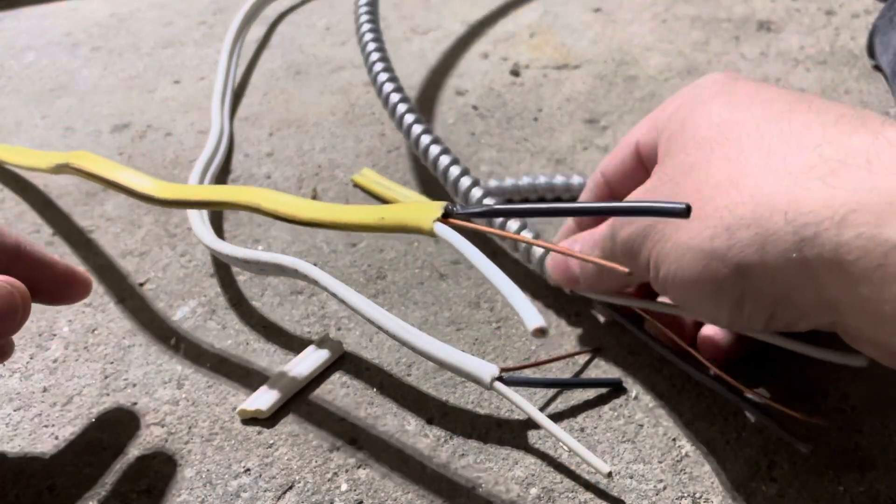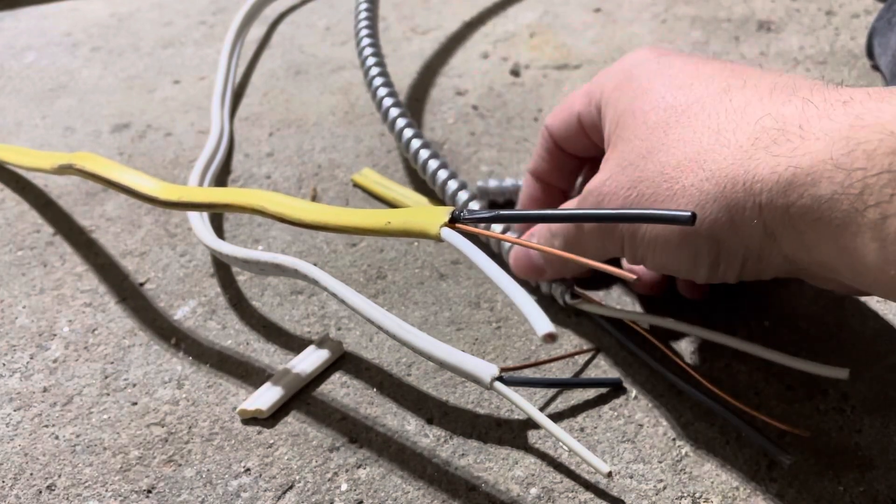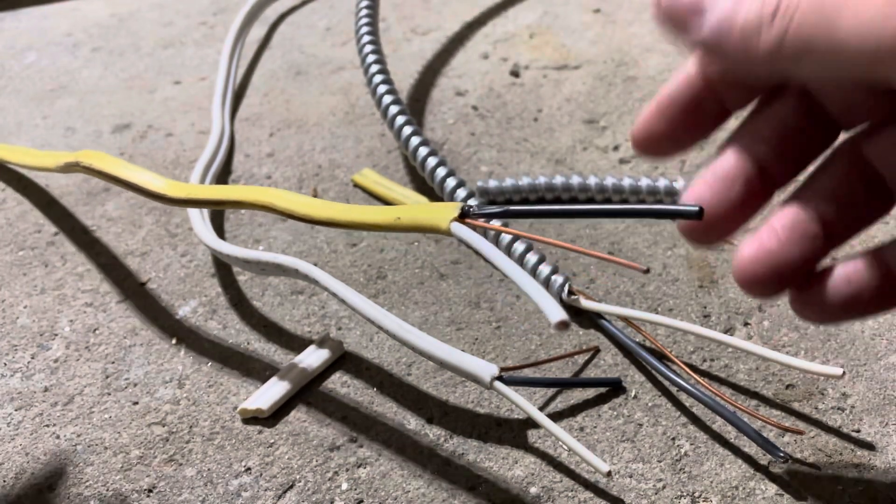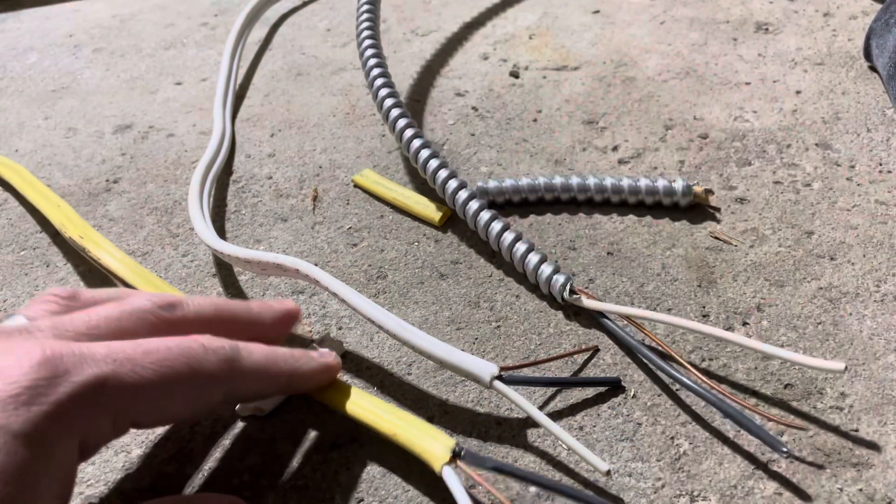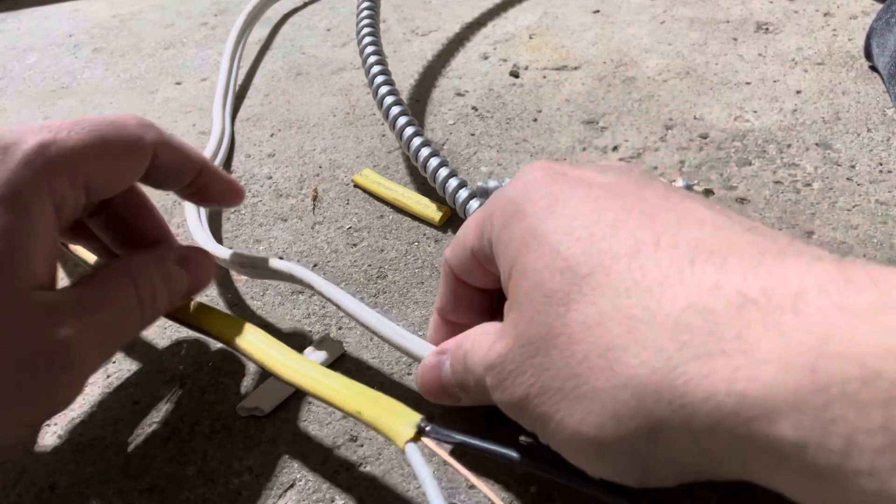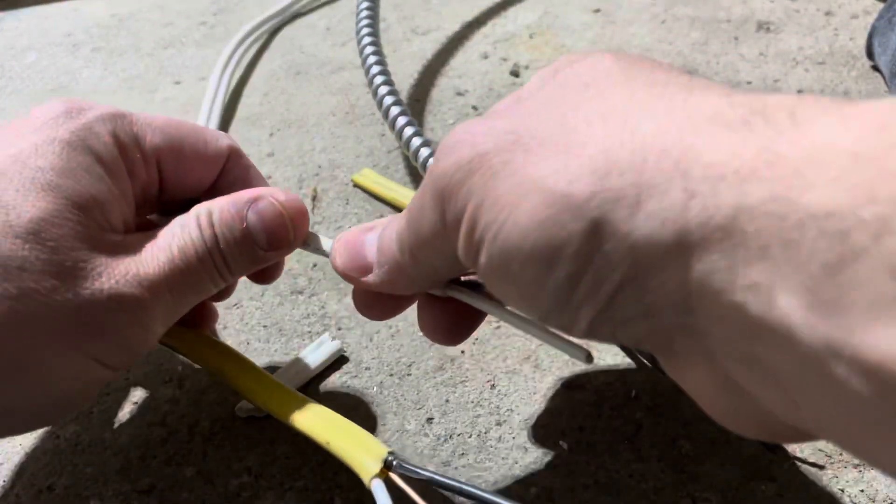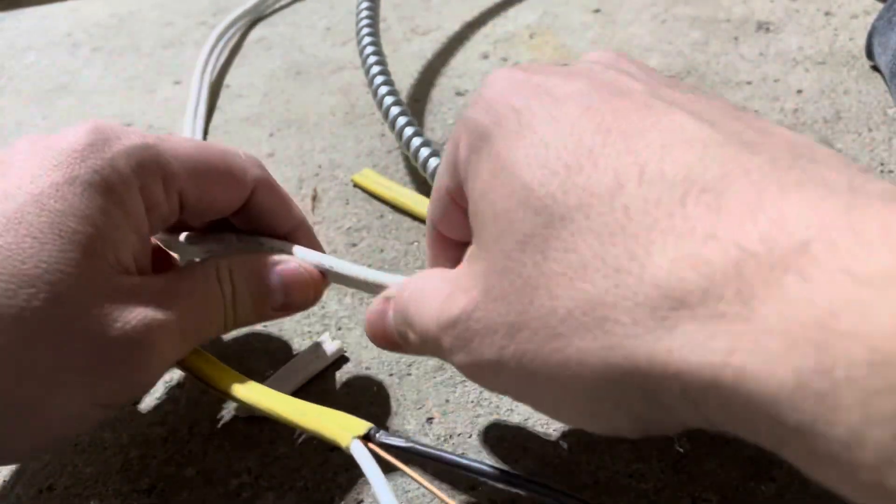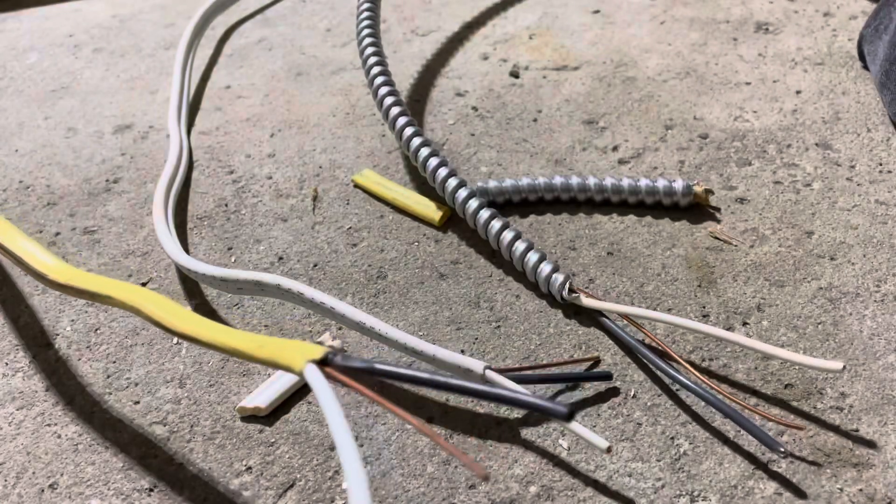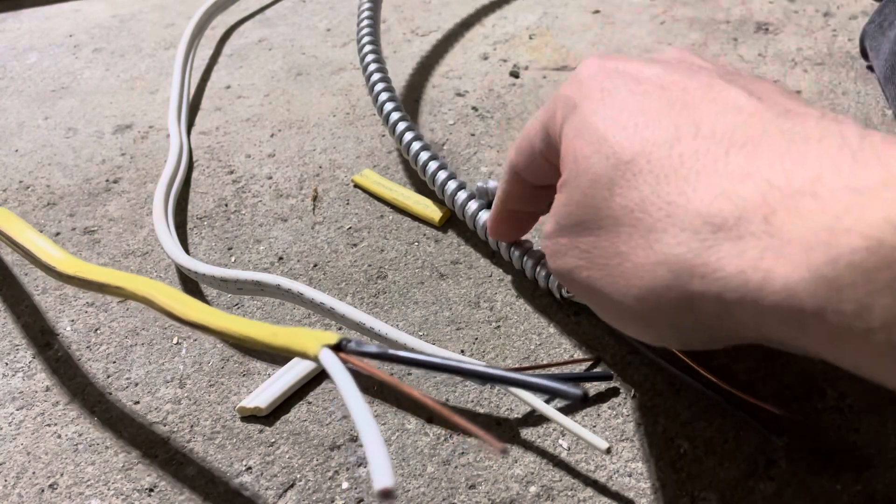With BX wire, you have this sort of metal insulation along the outside, and it's more geared towards being more durable and resilient because it has a harder shell essentially. Now with Romex wire, with both of these types of Romex wires, you have this rubbery insulation, this rubbery sheathing along the outside. It's still quite durable, but less durable than the metal along the BX. So essentially you have BX over here which has the metal insulation, and Romex has the rubbery insulation along the outside.